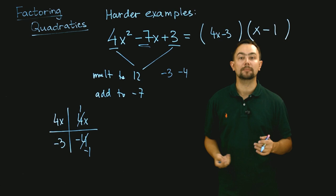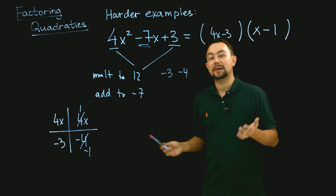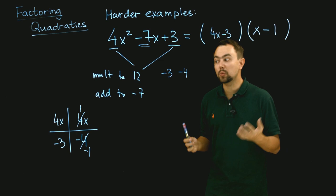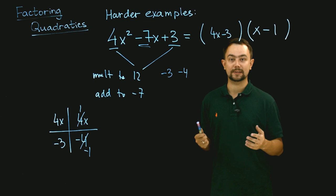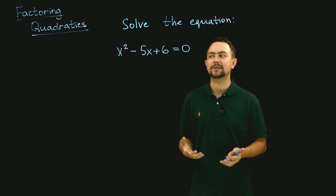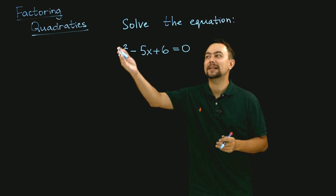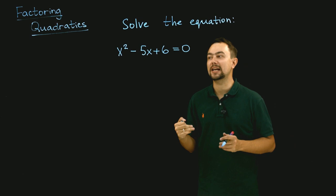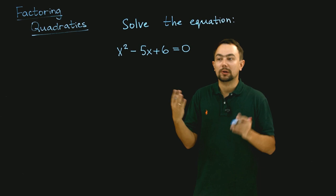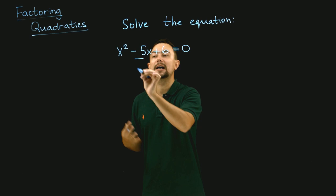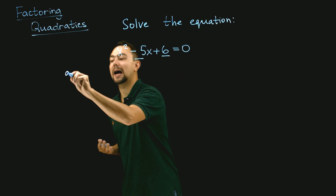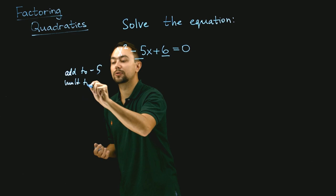This is how you factorize harder examples when there's a number other than 1 in front of x squared. I have to say, this method doesn't always work, but when it does it provides a really quick and easy way to factorize quadratics. Now I'm going to show you how to use factorization in everyday maths. We have the equation x squared minus 5x plus 6. We find two numbers that add to negative 5 and multiply to 6 — the numbers are negative 2 and negative 3.